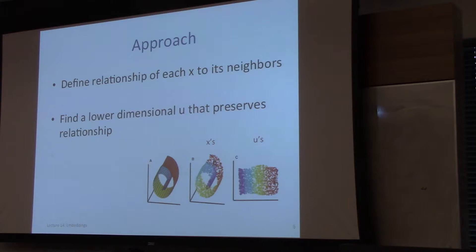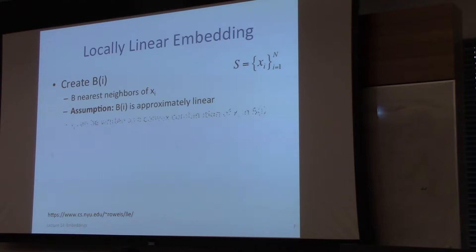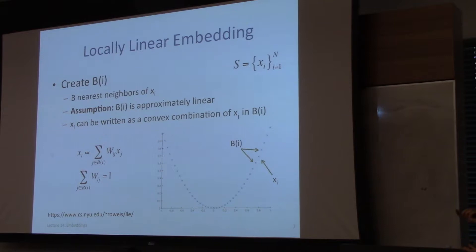The manifold is assumed to be low curvature, so if we have enough samples in a small window we can assume it is linear or close to linear. One implication of something being linear is that it's planar, and therefore any data point can be written as a convex combination of its neighbors — it's spanned by its neighbors.